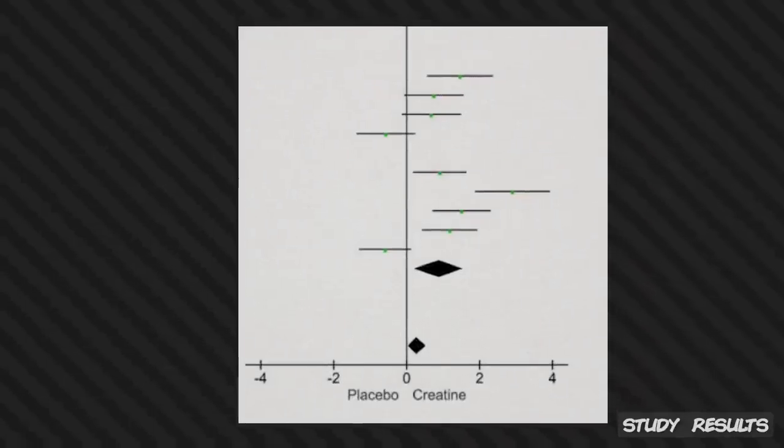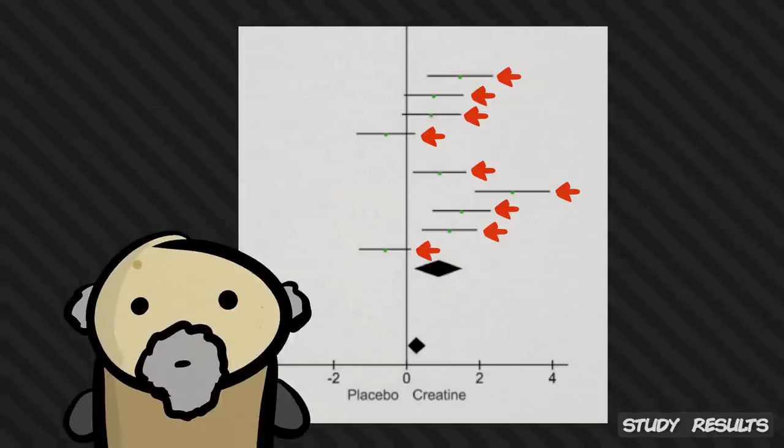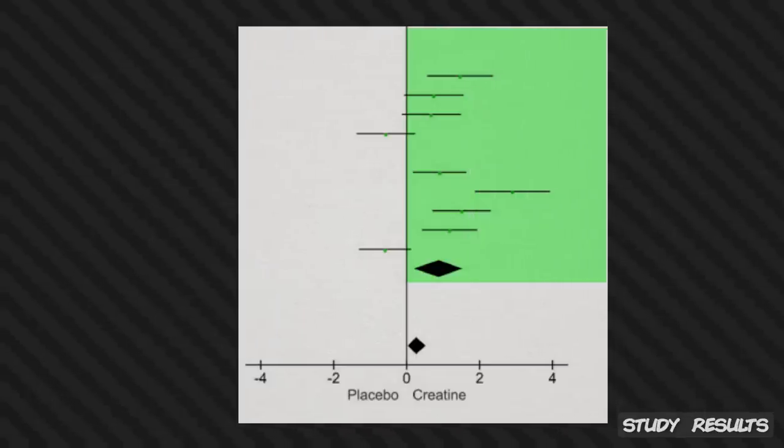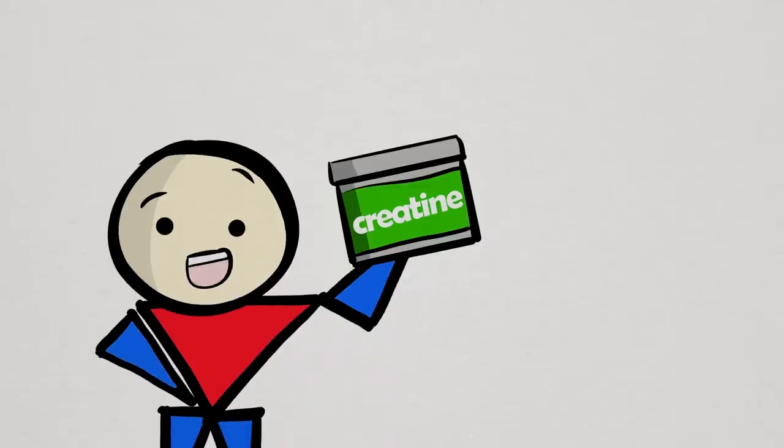With this in mind, let's take a look at this graph in the study to get a clearer understanding. Each horizontal line represents a memory assessment outcome. Here are specifically outcomes in older adults. The horizontal lines, along with the bottom diamond representing the overall average, plots primarily to the right side of the center vertical line, indicating that outcomes generally favor creatine supplementation.